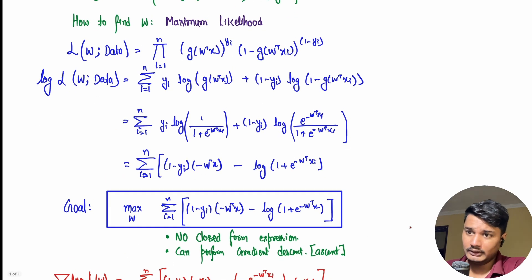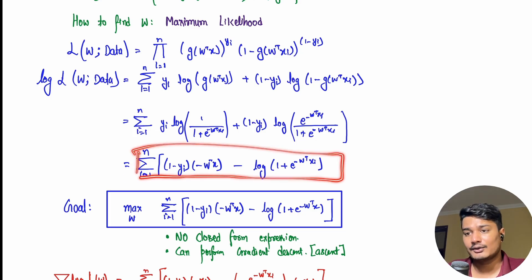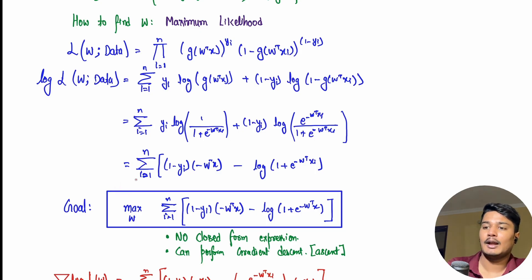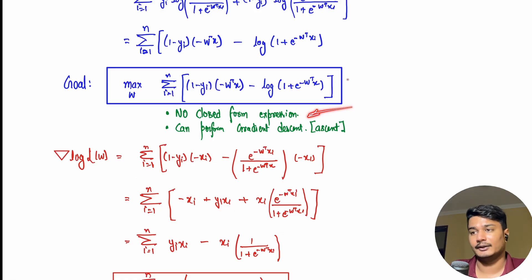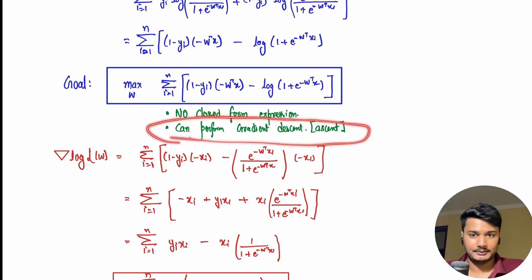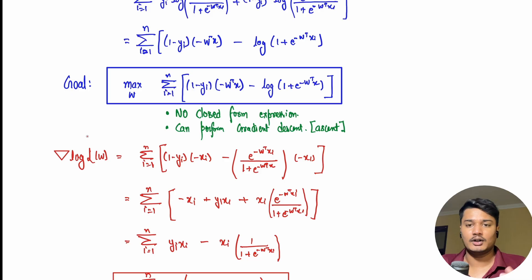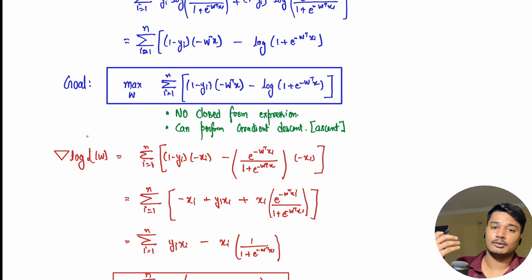Our goal is to maximize this log-likelihood function with respect to w. We simplified the expression by taking the log. However, the problem is there is no closed-form expression for this maximization — we cannot get a simple analytical solution. So instead, we can perform gradient ascent (or gradient descent) to find the optimal w iteratively.